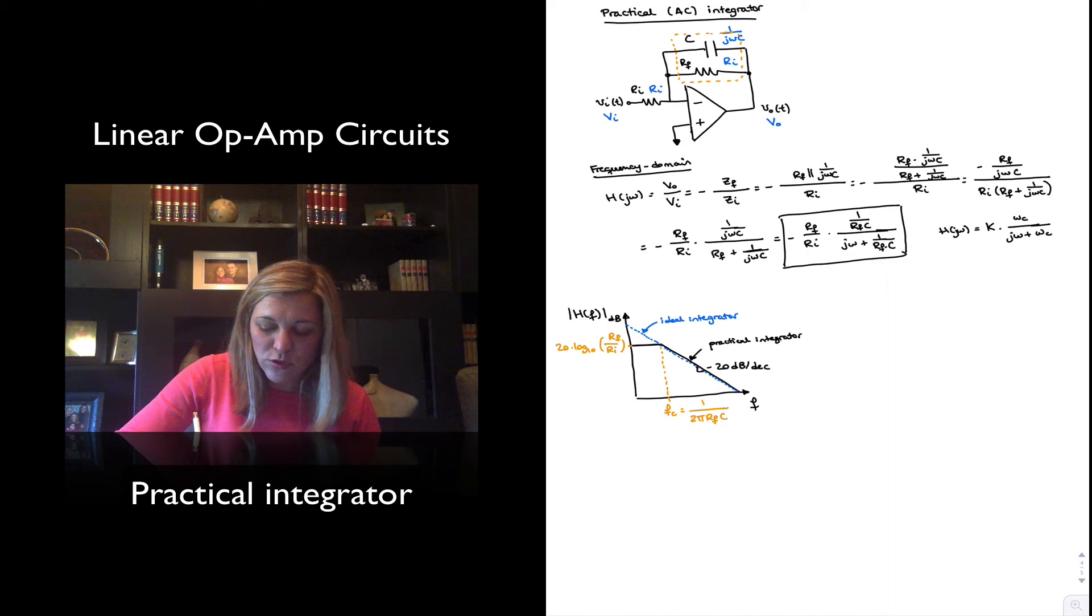The reason why it's called the AC integrator is obvious, because it behaves as an integrator for frequencies that are higher than the corner frequency. And so the idea is that you will not be amplifying, you will be cutting off your amplification for DC frequencies, so you're essentially only performing integration on the AC portion of the signal.